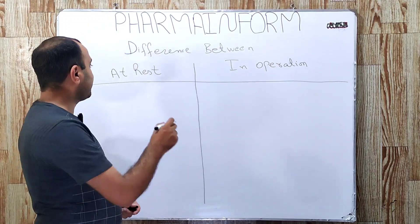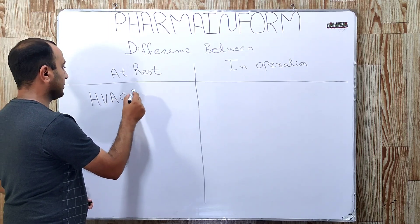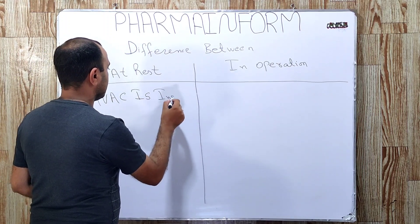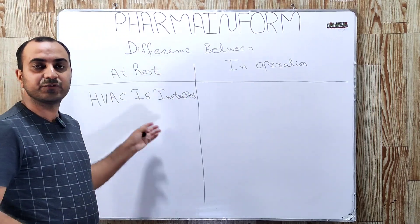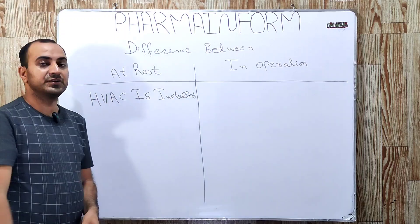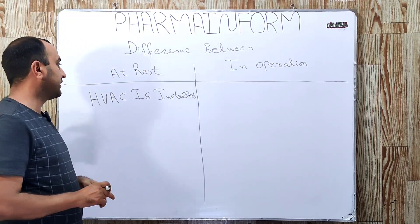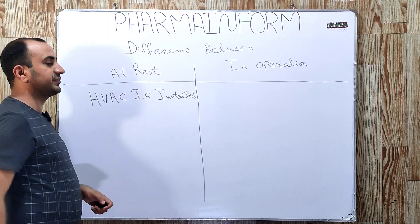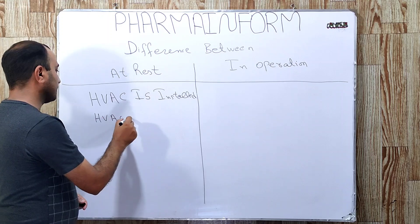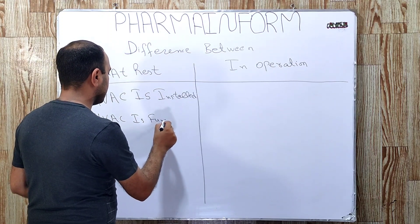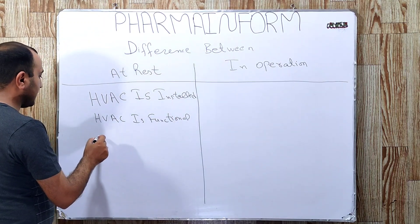At rest means HVAC is installed. If you are not familiar with HVAC, it stands for Heating, Ventilation, and Air Conditioning system. The link to the HVAC playlist is given in the description. At rest means HVAC is installed in the clean room, HVAC is functional, and all equipment is installed.